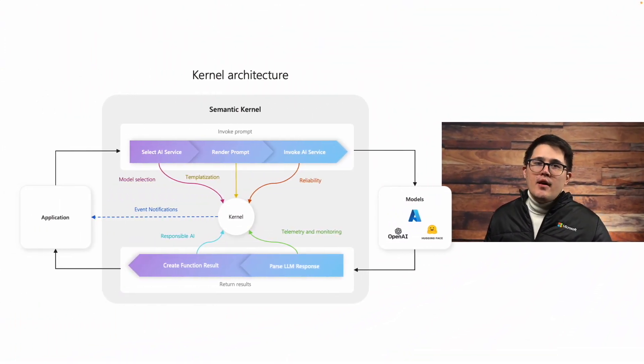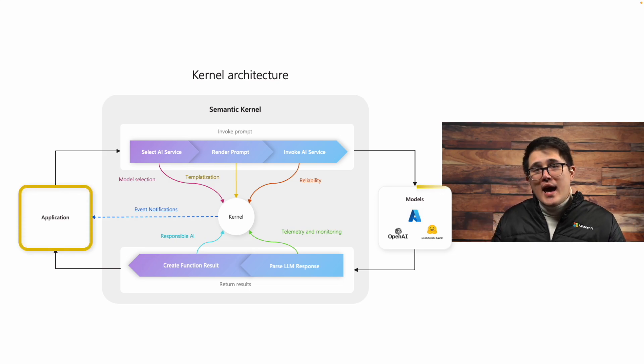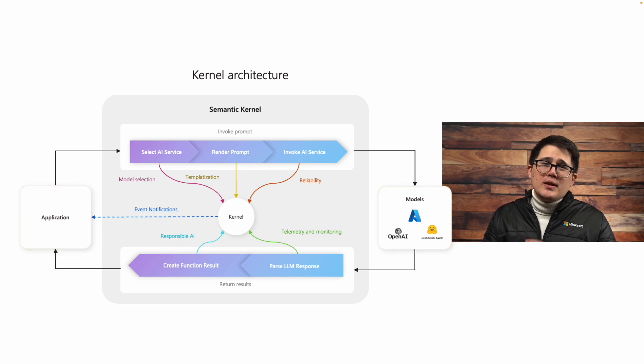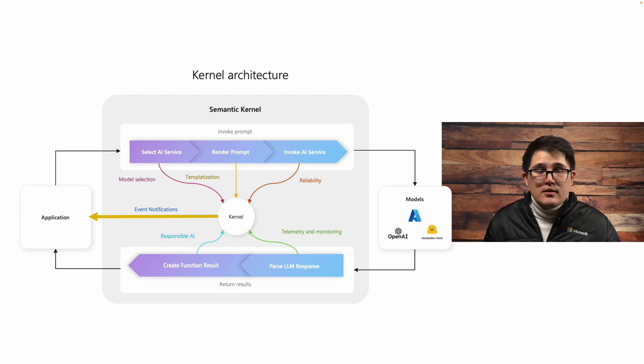At the high level, most of those improvements were about bringing the kernel and making it the core part of any AI feature inside of your application. As part of this architecture, all of the services, the prompts, and the translation layer between your application and your AI models is now centralized into a single class or object. We think this is ultimately a better architecture than other approaches like chains or flows, because it means you have a single place to add observability, practice responsible AI, and add things like telemetry and hooks to your application.